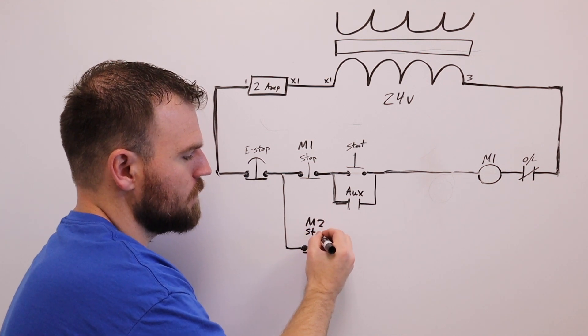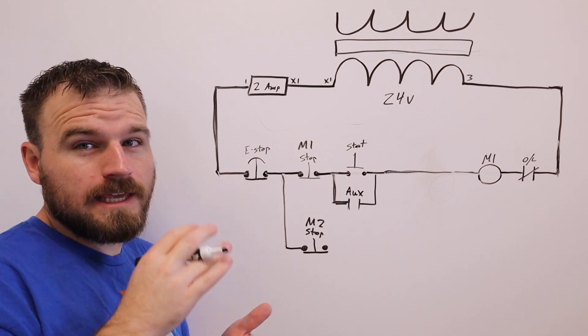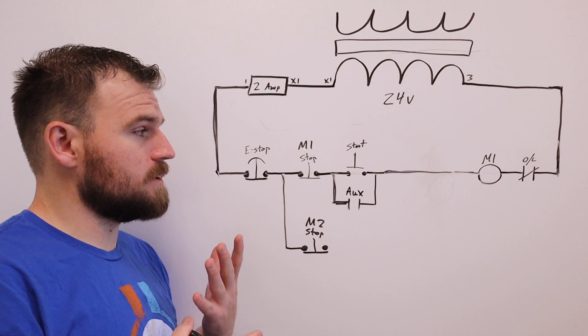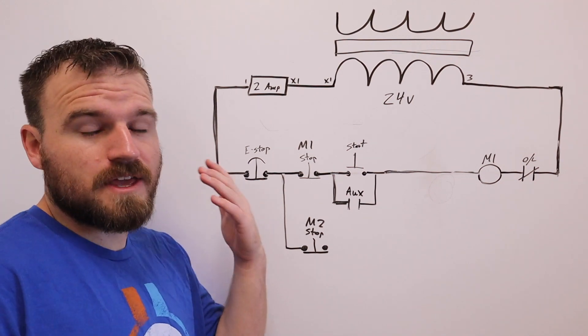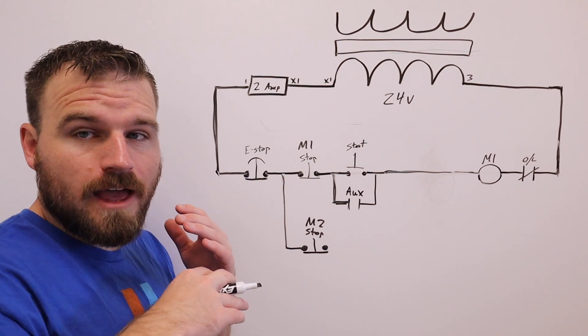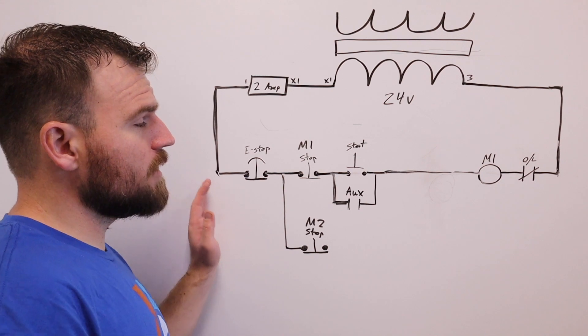Before I get too far, I wanted to talk about this e-stop. E-stops are pretty crucial in all different types of machinery. They need to kill the entire circuit, not just a portion or a part. They need to kill everything - the whole machine has to stop.